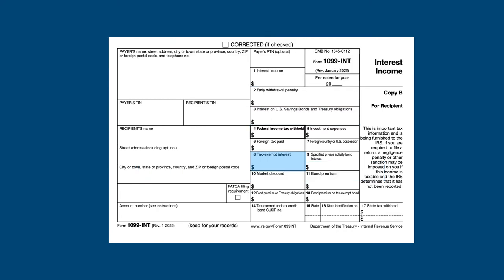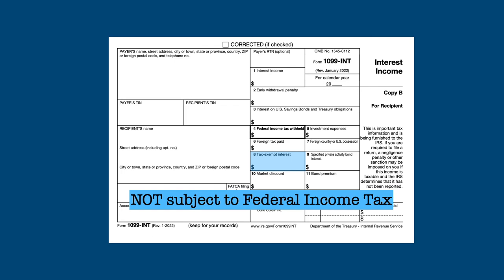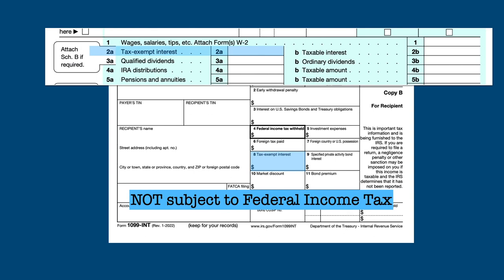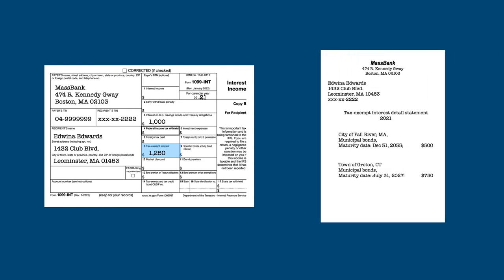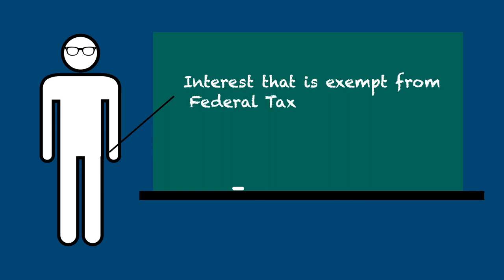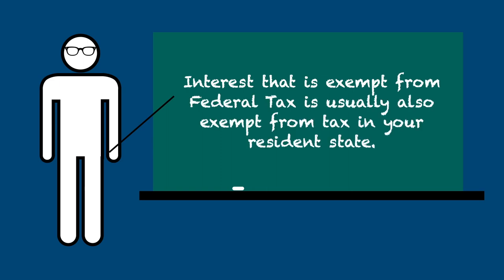Box 8 lists tax-exempt interest. Any interest paid by a state or local government on its obligations is not subject to federal income tax. Though it's non-taxable, you must still report it on line 2A of your Form 1040 because the IRS takes tax-exempt interest into account when determining whether any Social Security benefits you receive are taxable. When you earn tax-exempt interest, along with your 1099-INT you will also receive a statement telling you what state or local government paid the interest. Interest that is tax-exempt for federal purposes is usually taxable at the state level; however, it is usually not taxable if the interest is paid by your resident state.